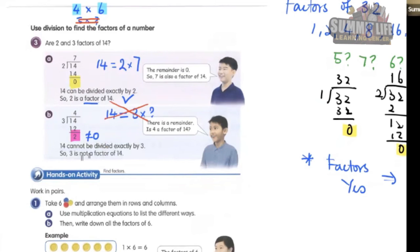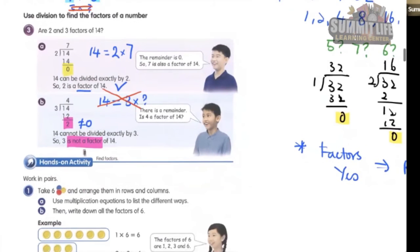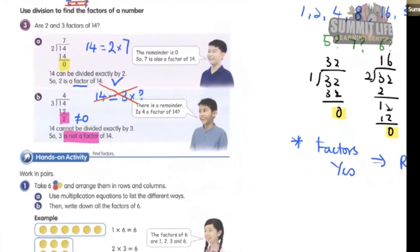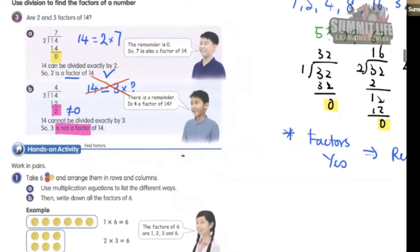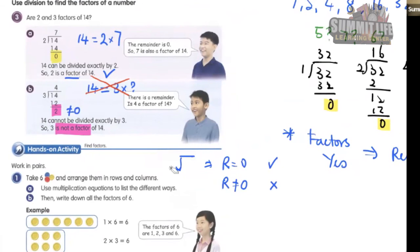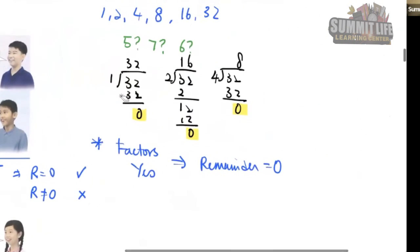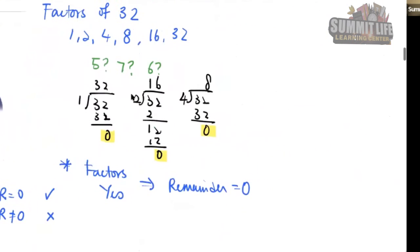So how do you check whether a number is a factor or not? First, you do the division. If the remainder is 0, then yes. If the remainder is not equal to 0, then no — it is not a factor. So by doing division, you can check. Going back to 32: when I ask you whether 5, 7, or 6 are factors, you can check by division.